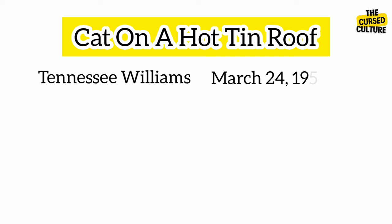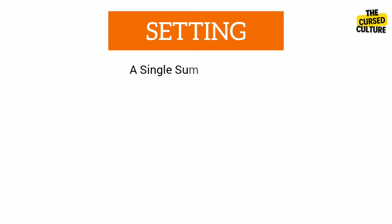Cat on a Hot Tin Roof is a play by Tennessee Williams, first performed on March 24, 1955 at the Morosco Theater in New York and directed by Elia Kazan. This play is a tragedy, continuous with two intermissions, and revolves around family drama.